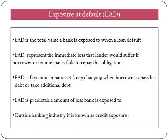Suppose ABC bank has given a loan of 100 million to Mr. XYZ. Here the bank is exposed to this 100 million given to Mr. XYZ if he defaults to repay his debt. This is the maximum amount ABC bank could lose in case of default by Mr. XYZ. This EAD will keep on changing as and when the borrower repays his debt or takes an additional loan, and this EAD is the predictable amount of loss ABC bank is exposed to.